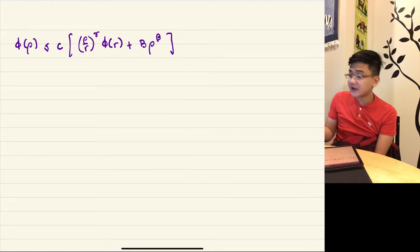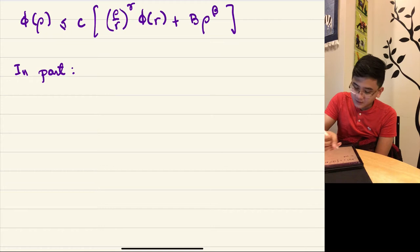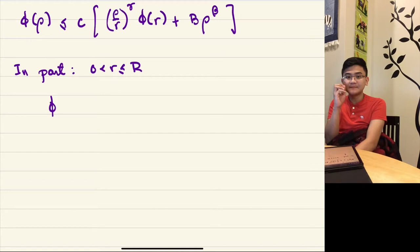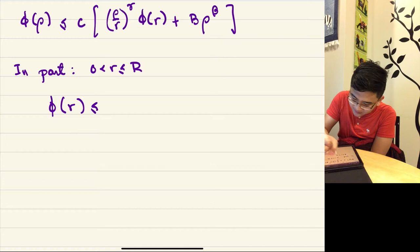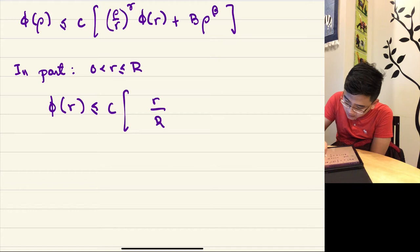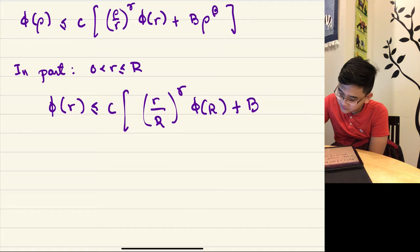In the particular case where instead of ρ and r you just have r and big R, you get something like (r/R)^γ · φ(R) + B·r^β. Note that β < γ, so pulling out r^β gives you r^(γ−β) — which is positive — over R^γ times φ(R), plus B. Those things are bounded.